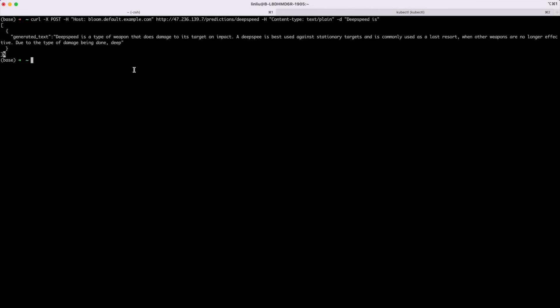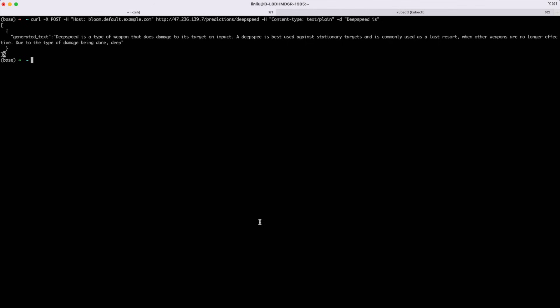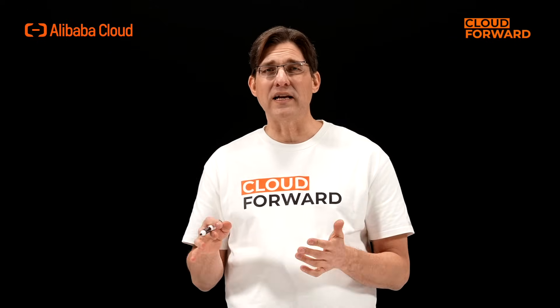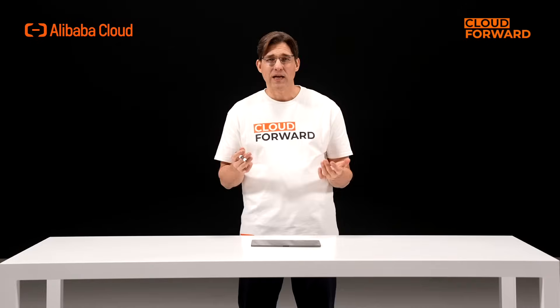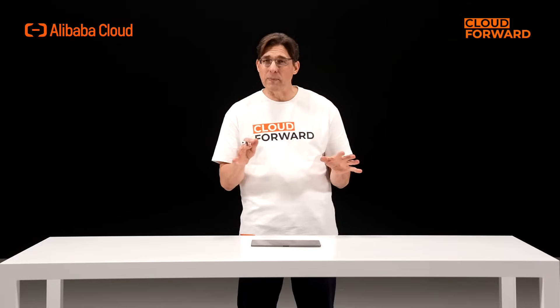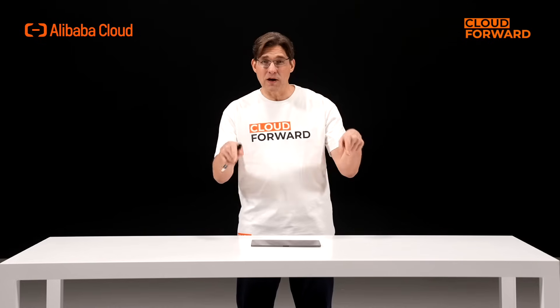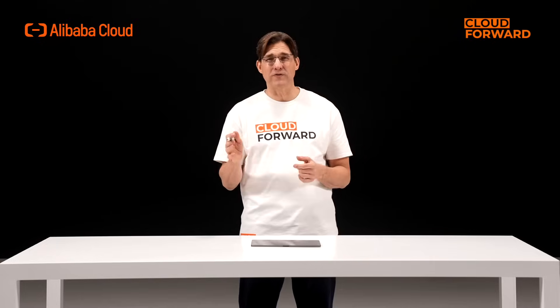That's it. Using Arena, you've successfully deployed a single-machine multi-GPU inference service for the Bloom 7b1 model. We hope to provide you with high-performance, low-latency, and elastically scalable foundation model inference service at a lower cost through the command line tool Arena in the cloud-native AI suite. If you are keen to know more about Alibaba Cloud ACK native AI suite, click the link in the description below. And don't forget to subscribe to this channel for more videos of Cloud Forward in the future.